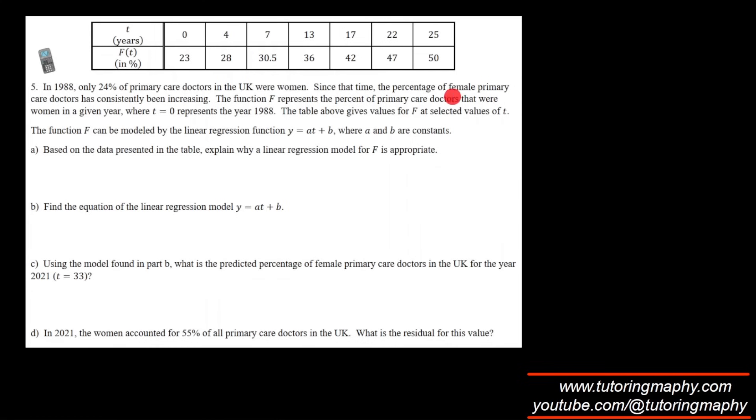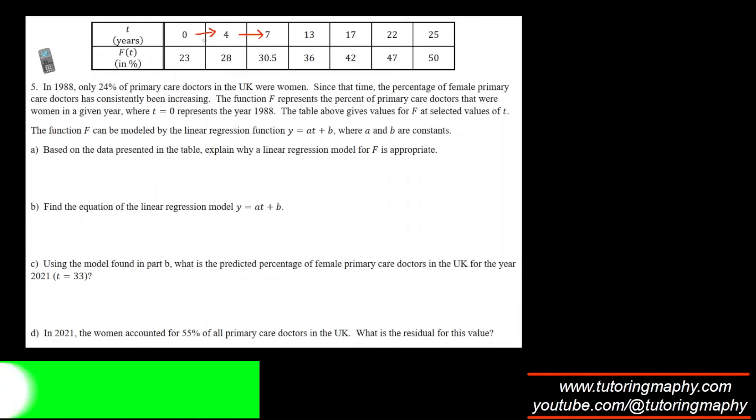In 1988, only 24 percent of primary care doctors in the UK were women. Since that time, the percentage of female primary care doctors has consistently been increasing. The table gives the percentage of primary care doctors that were women in a given year, where t equals zero represents the year 1988. They're asking us why linear regression is appropriate. Well, because it looks like the x is increasing by about the same value, and the y is also increasing by about the same value around those numbers.